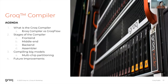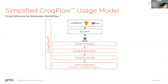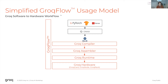Thanks for having me. I'm Philip, a compiler engineer at Grok. I'll be going over the Grok compiler. We'll start by talking about where it fits into Grok Flow, then cover the various phases of the compiler: the front end, middle end, back end, and assembler. From there we'll talk about how the Grok compiler handles big models using multi-chip partitioning, and finally we'll cover future improvements in upcoming releases.